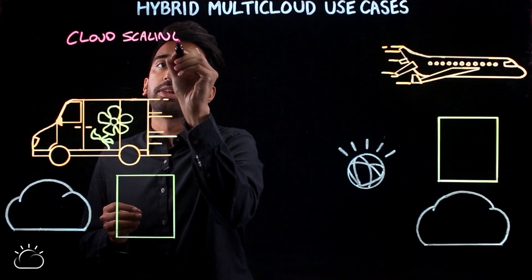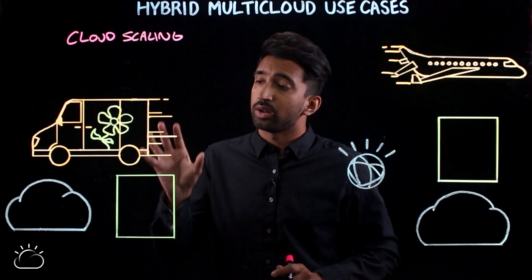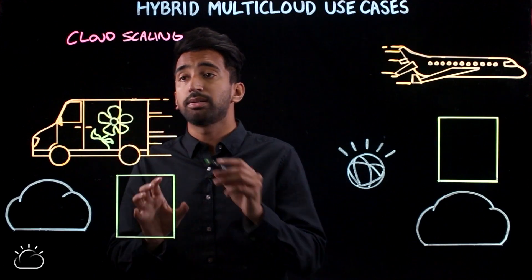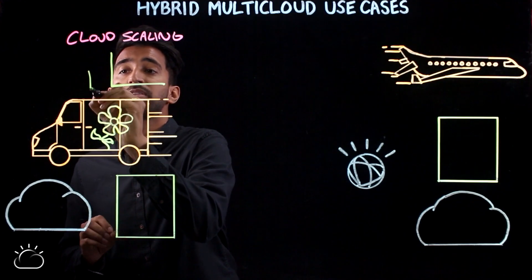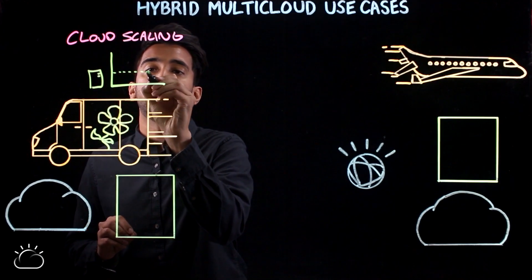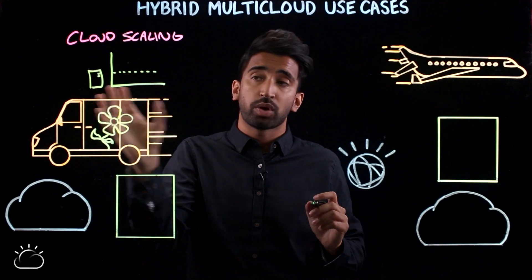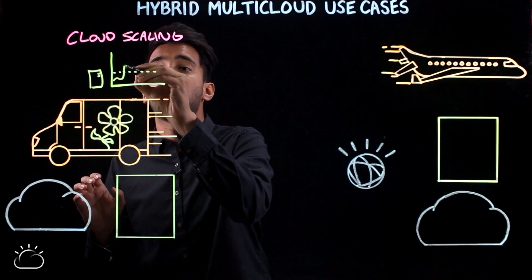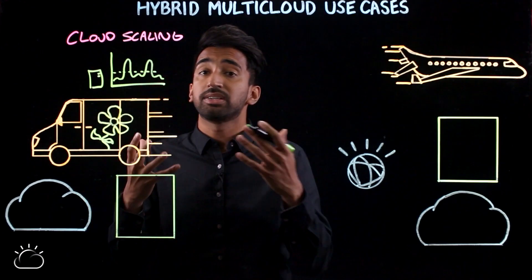Most of us are probably familiar with this — it's one of the main reasons for adopting the cloud. Let's say we have a flower delivery service that is able to hit a certain bottom line of users. They have on-premise infrastructure and it can handle a certain amount of user load. Visualizing this throughout a calendar year, you can imagine that their load goes up and down in response to specific holidays.